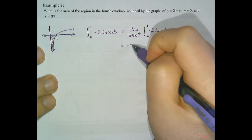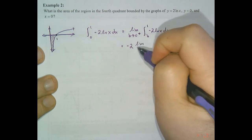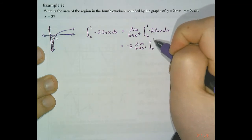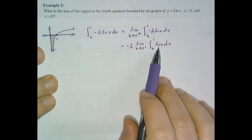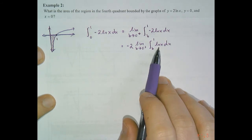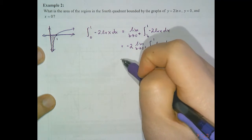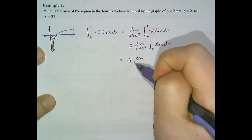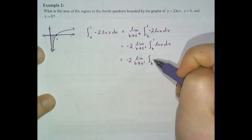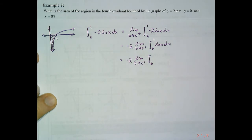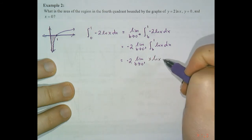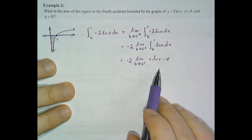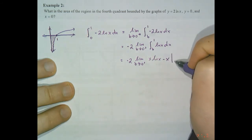The natural log is not a standard antiderivative rule, but we can find its antiderivative using integration by parts. The antiderivative of ln(x) is x ln(x) minus x. We need to evaluate this limit expression from b to one, so plugging in the top boundary gives the limit as b approaches zero from the right of: one times ln(1) minus one, subtract b times ln(b) minus b.